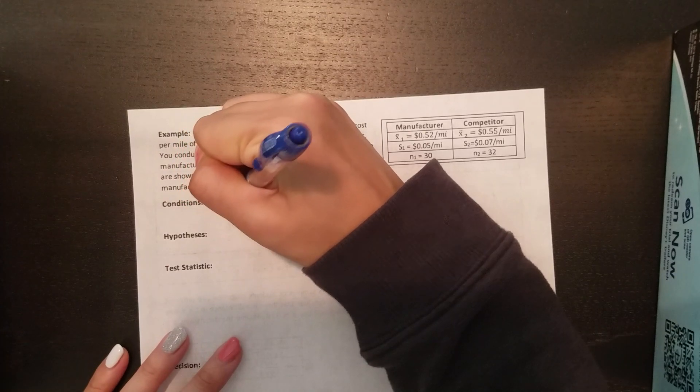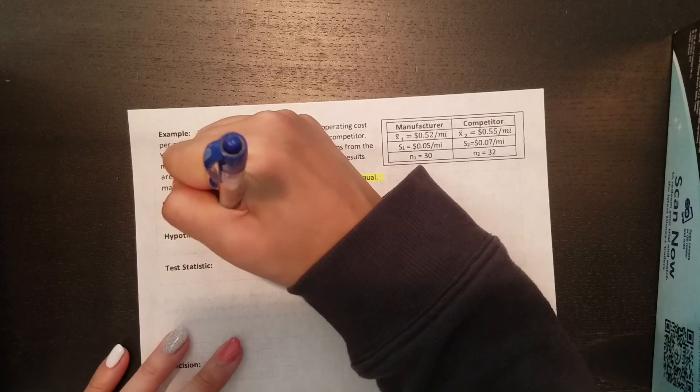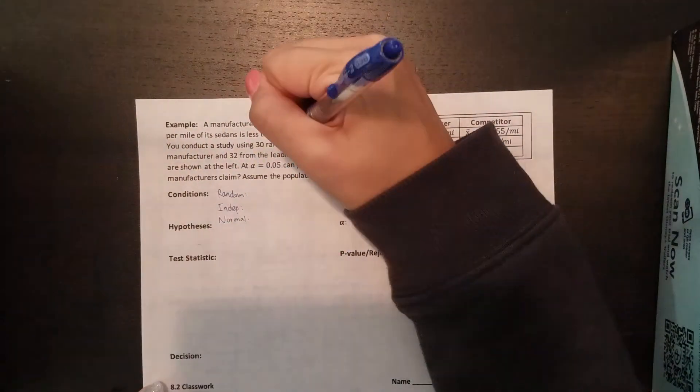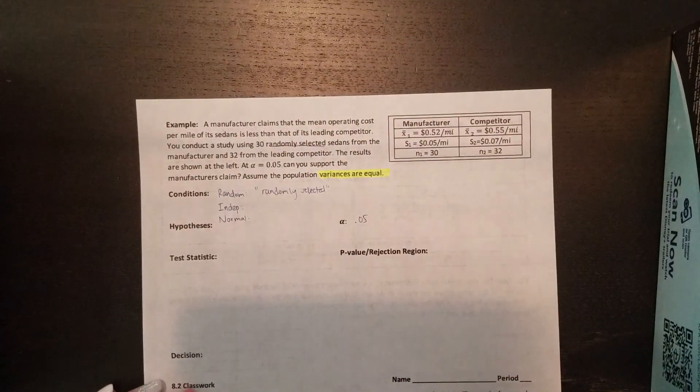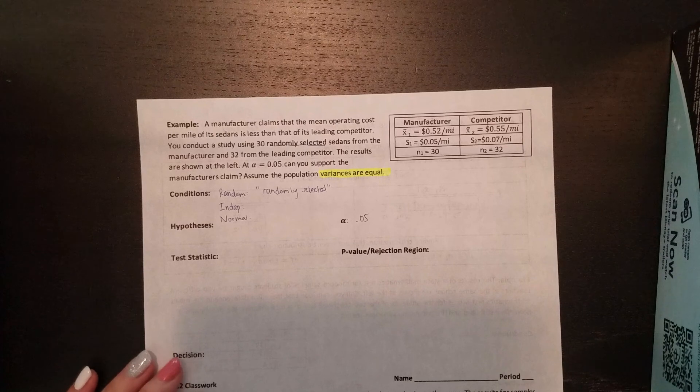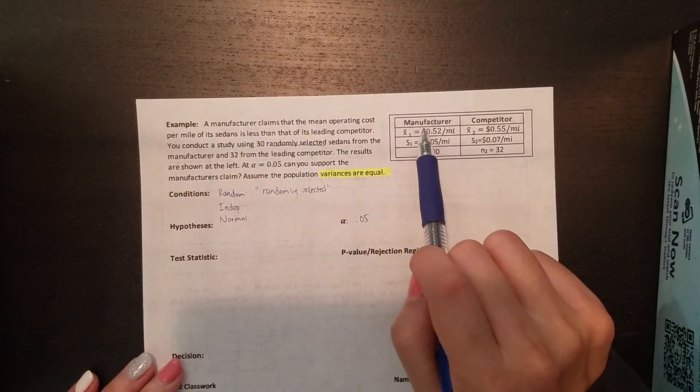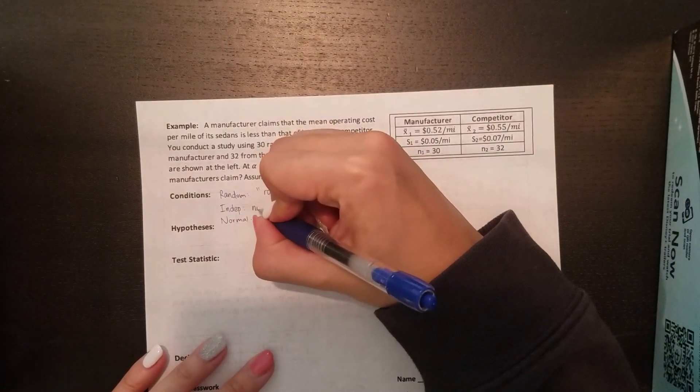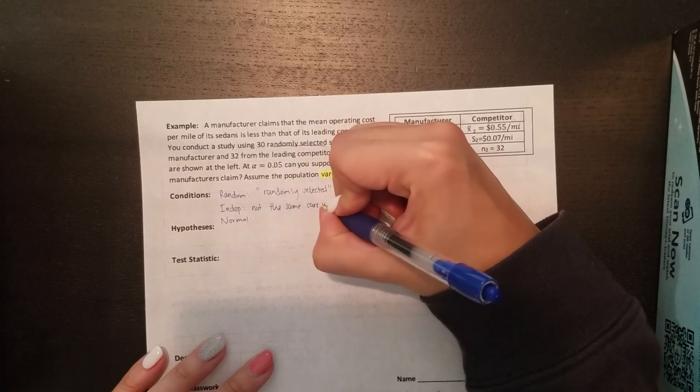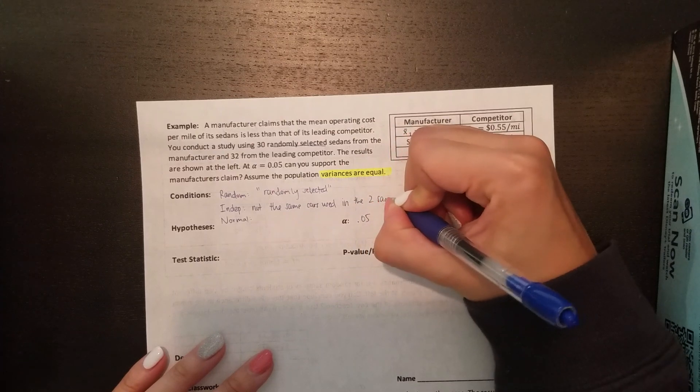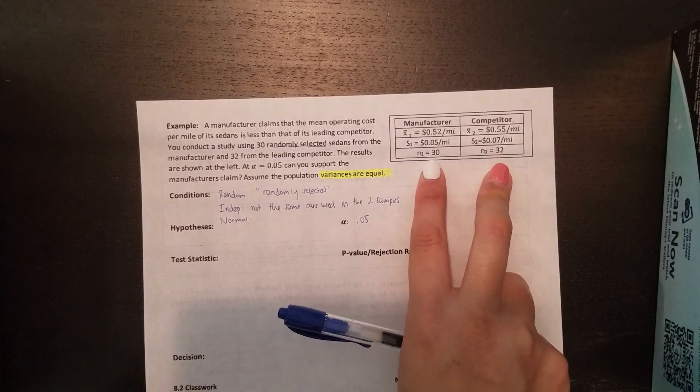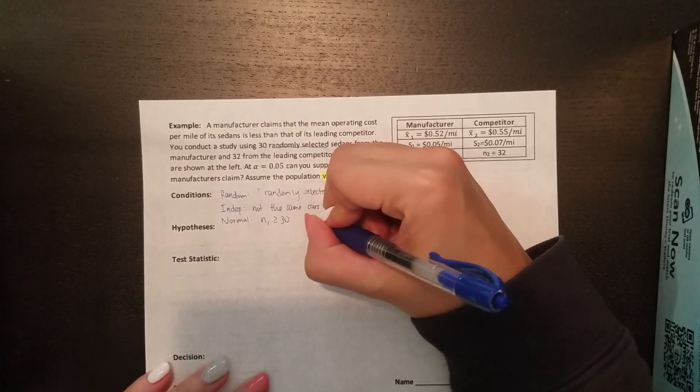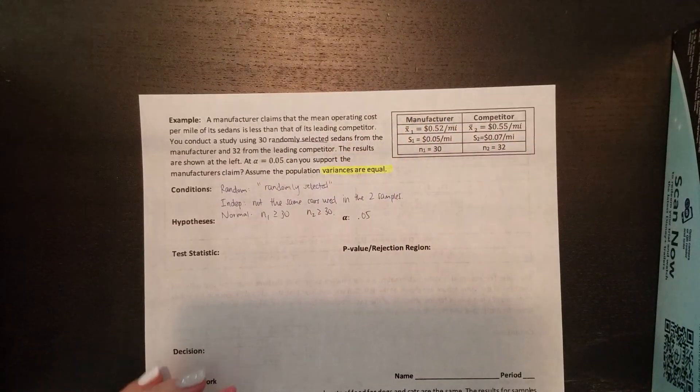Starting with the conditions. We need randomness, independence, and normality. So they told us randomly selected. For independent samples, are we using the same cars for both samples? They're talking about the two samples being from the manufacturer and the competitor. So obviously they can't be the same cars. And the normality, either it has to say in the problem that it's normally distributed, or our sample sizes are 30 or bigger. And we have 30 and 32, so both of those work. N₁ is greater than or equal to 30, so is N₂.